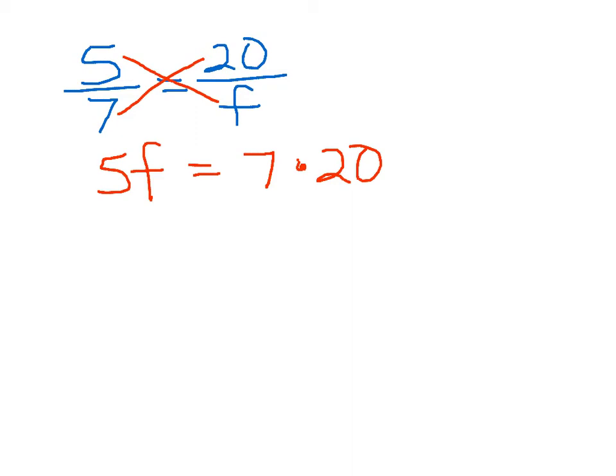So our next step is to isolate this variable, this f, all by itself so that we have an f equals something. So we'll divide both sides of the equation by 5. 5 divided by 5 equals 1, so we're left with 1f, which really just means f. We divided the left side of the equation by 5, so now we need to divide the right side of the equation by 5 as well.